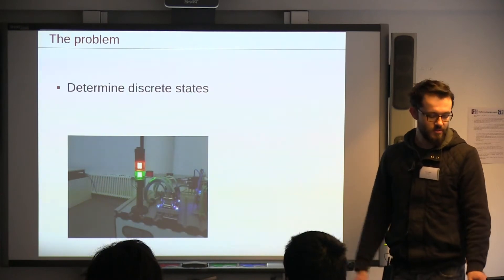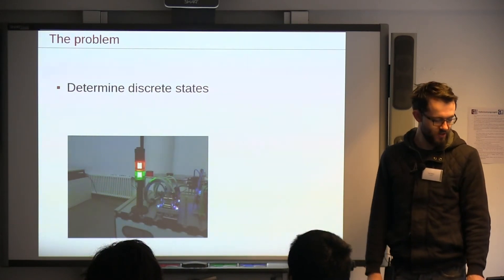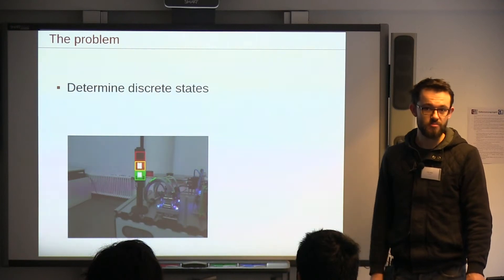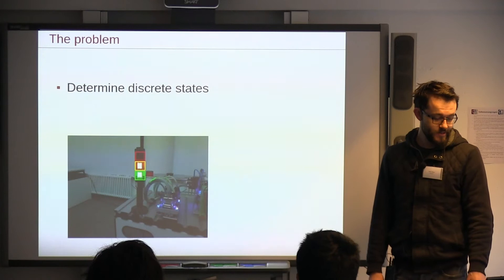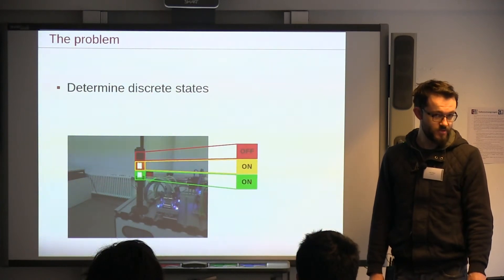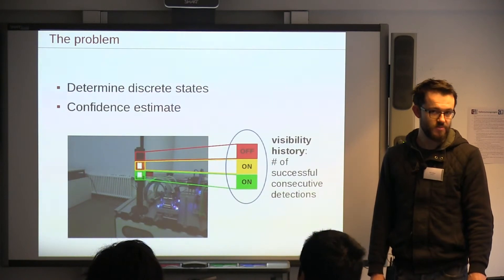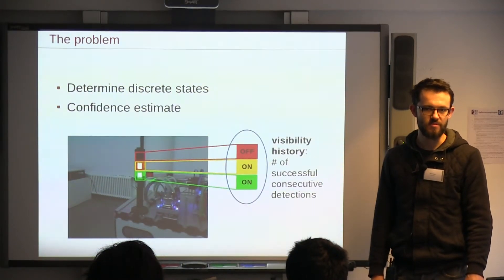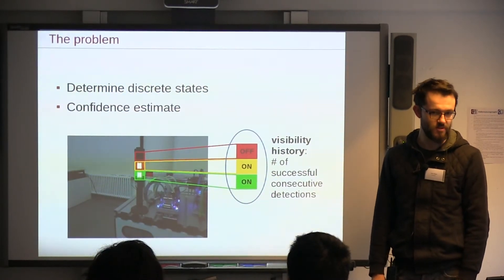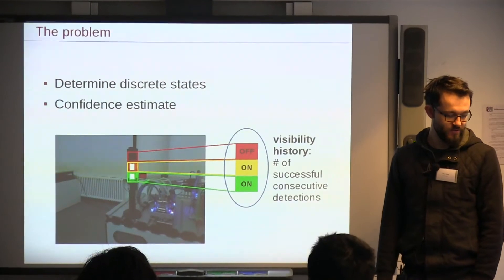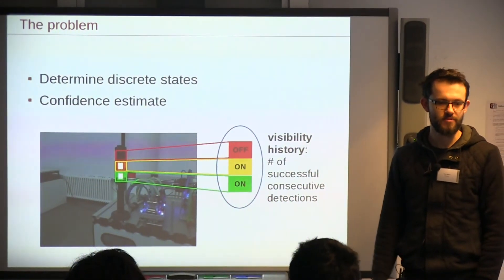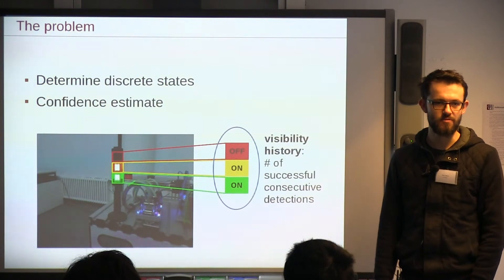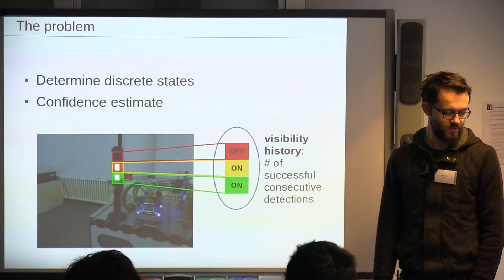Currently, this is what it looks like. This is an unstructured pile of pixels. From this, first of all, we need to determine which part of the picture we consider the red signal, the yellow and the green signal. Then we want to know which of these is on or off. Along with that, we also need some sort of confidence estimate because the detection is never going to be perfect. We need some estimate of how reliable the output is going to be. This is what we call the visibility history of a detection. We simply use the number of consecutively successfully detected frames. If you had successfully detected a signal for one second, that would mean a visibility history of 30 frames.